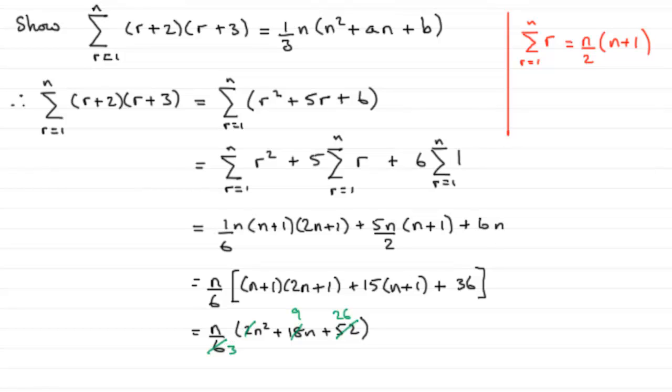So this is looking pretty good now. When we compare it with what we've got up here, we've got one-third n, and then bracket n-squared plus 9n plus 26. So when you compare this to what we've got here, you can see that the a must be 9 and the b must be 26. So if we put to the right here, therefore a equals 9 and b equals 26.